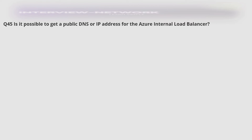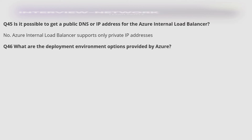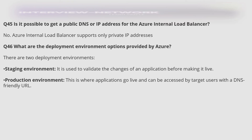Is it possible to get a public DNS or IP address for the Azure internal load balancer? No — Azure internal load balancer supports only private IP addresses. What are the deployment environment options provided by Azure? There are two deployment environments: staging environment, which is used to validate changes to an application before making it live, and production environment, where applications go live and can be accessed by target users with a DNS-friendly URL.